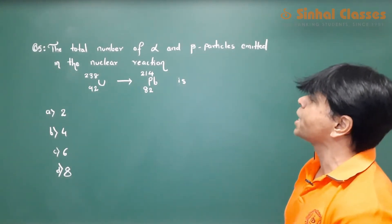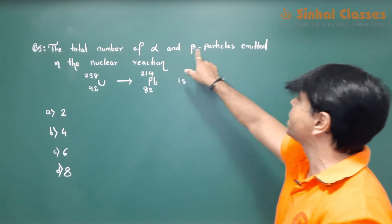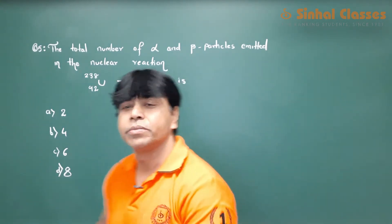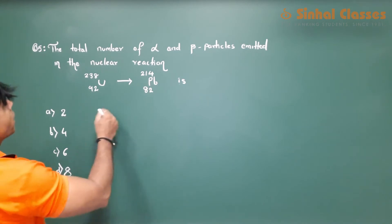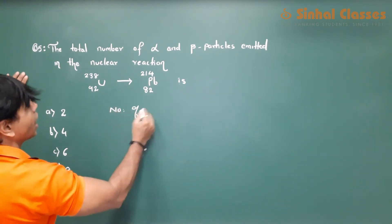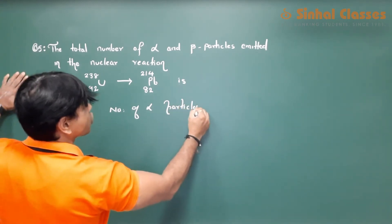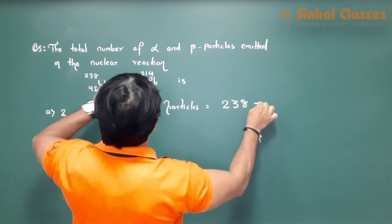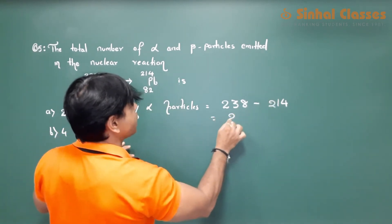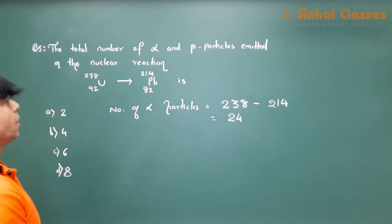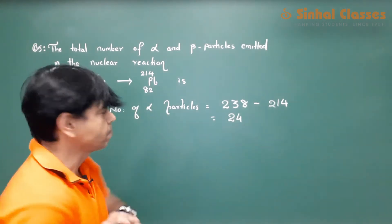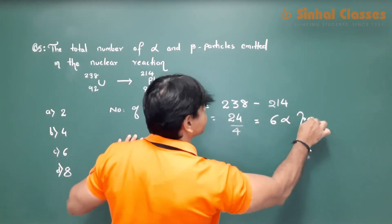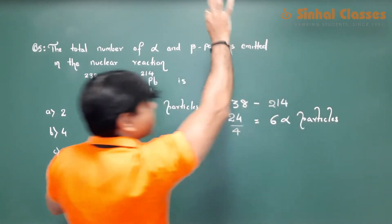Have a look at this question. It says the total number of alpha and beta particles emitted in a nuclear reaction. For number of alpha particles: mass number is 238 minus 214 gives 24. For every alpha particle the mass number reduces by 4. So 24 divided by 4 gives 6 alpha particles.